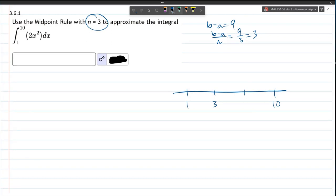So, not 3. That's bad math. 4, 7, 10. So, we've got 3, 3, 3. So, each width is 3.